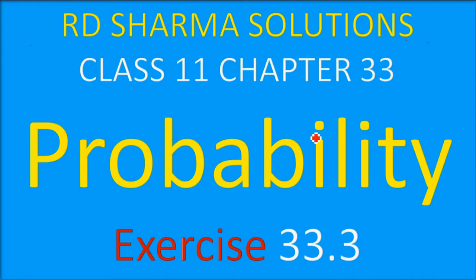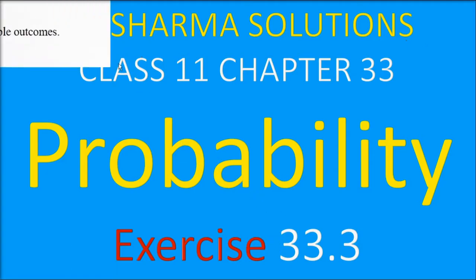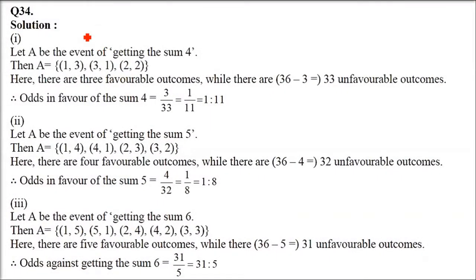This is R.D. Sharma Solution Class 11, Chapter 33 Probability, Exercise 33.3. This is question number 34: two dice are thrown. Find the odds in favor of getting the sum 4 (first part), sum 5 (second part), and what are the odds against getting the sum 6 (third part). We have already done a question like this and I will give you another way to do this.